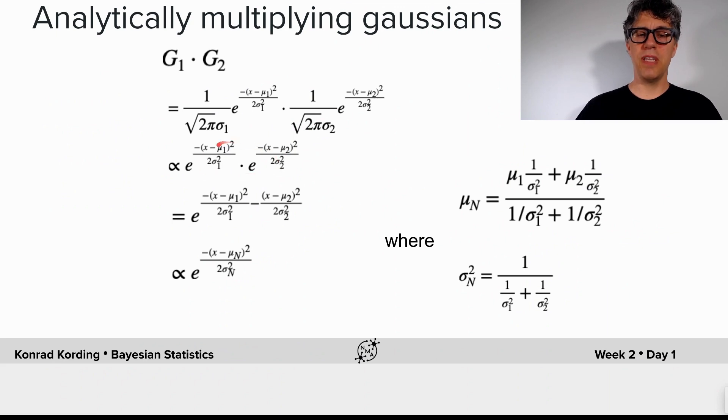So therefore we have the product of these two terms here. Now, e to the a, e to the b is e to the a plus b, which is what we use here.